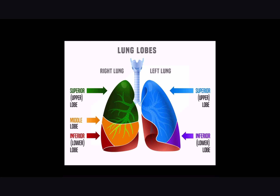As this picture shows us, our lungs are separated into different sections and these sections are referred to as lobes. On our right lung, we have three lobes: our superior, middle, and inferior. On our left lung, we have two lobes — superior and inferior.